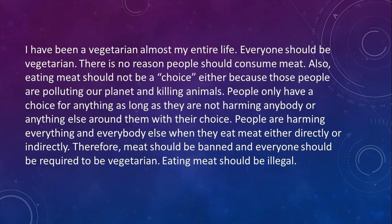Here is the argument from last time. I'll just read it through and then we'll extract the big ideas rather than going sentence by sentence. In my opinion, this was the worst of the two arguments — it's not a good argument; I'm not presenting this as an example of how to argue. So: 'I've been a vegetarian almost my entire life. Everybody should be vegetarian. There's no reason people should consume meat. Also, eating meat should not be a choice either because people are polluting our planet and killing animals. People only have a choice for anything as long as they're not harming anybody or anything else around them with their choice. People are harming everything and everybody else when they eat meat either directly or indirectly. Therefore, meat should be banned and everybody should be required to be vegetarian. Eating meat should be illegal.'